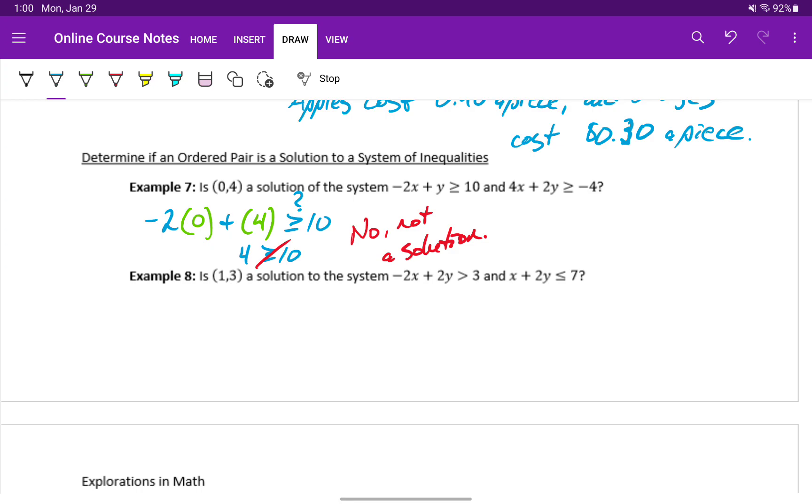We can look at doing the same thing in example 8. Now we have a new system of inequalities and a new x-y pair. So we'll take negative 2 times 1, plus 2 times 3, and check to see if that is strictly greater than 3.